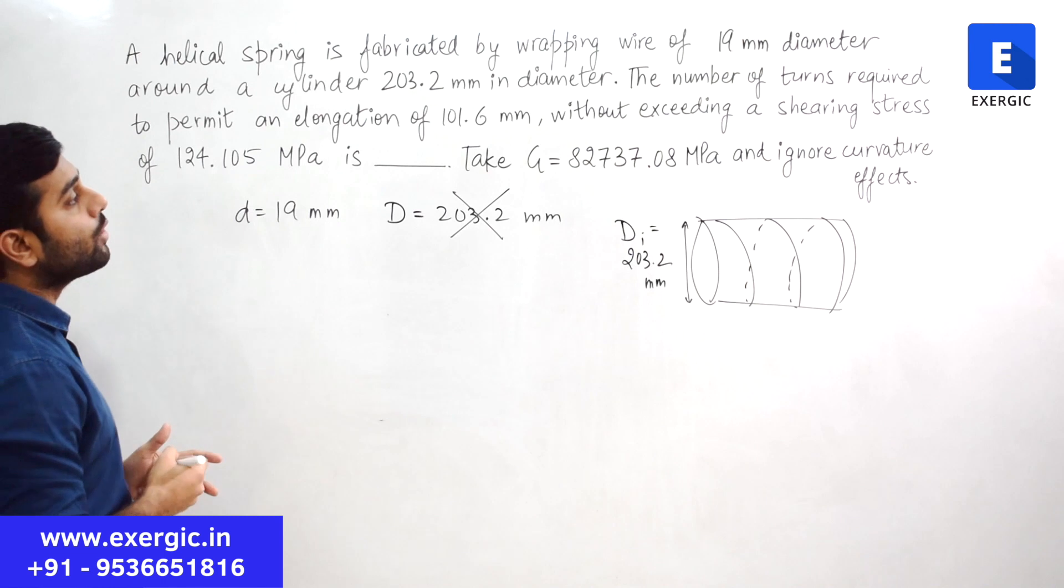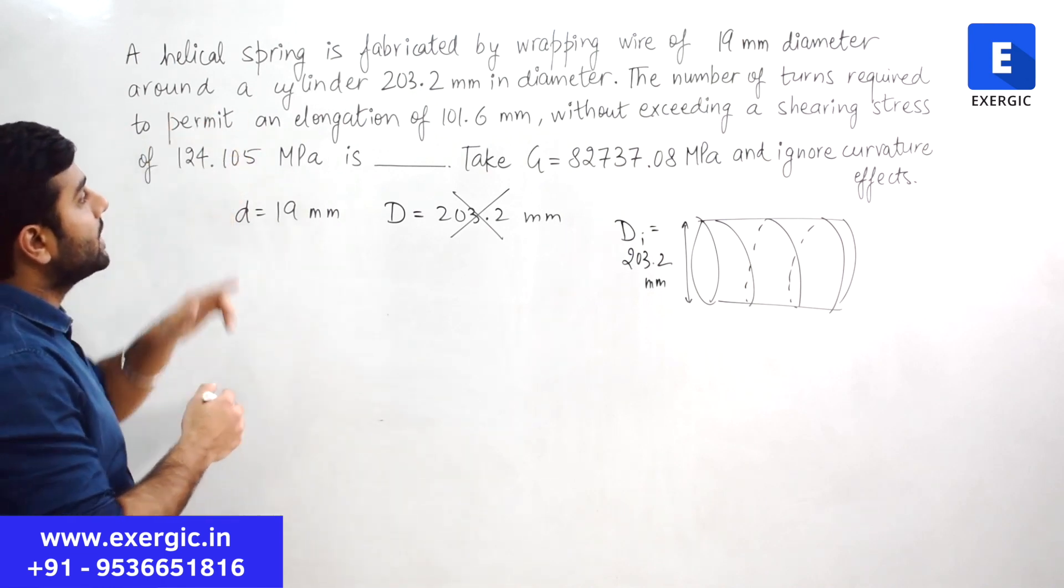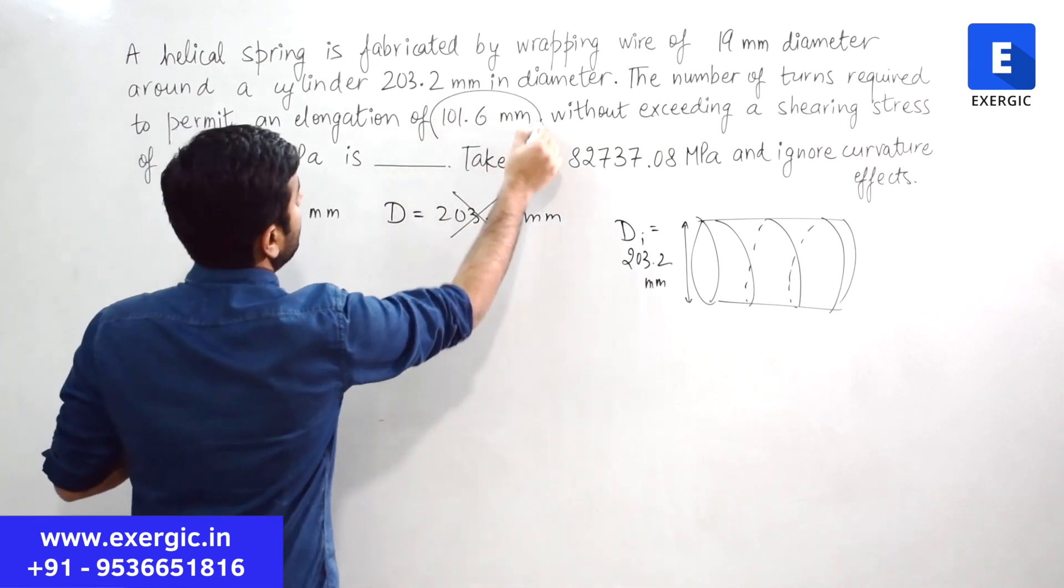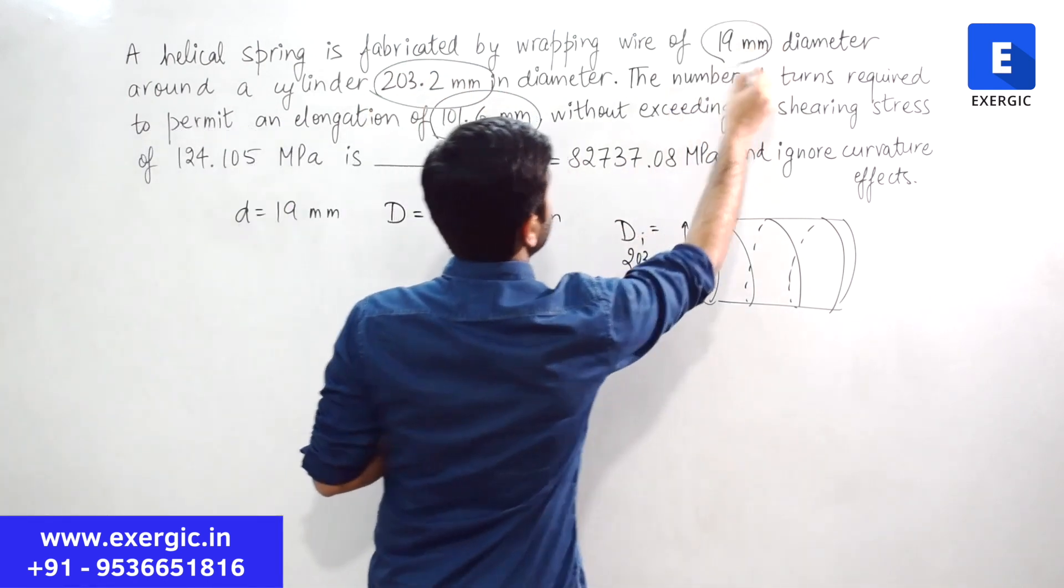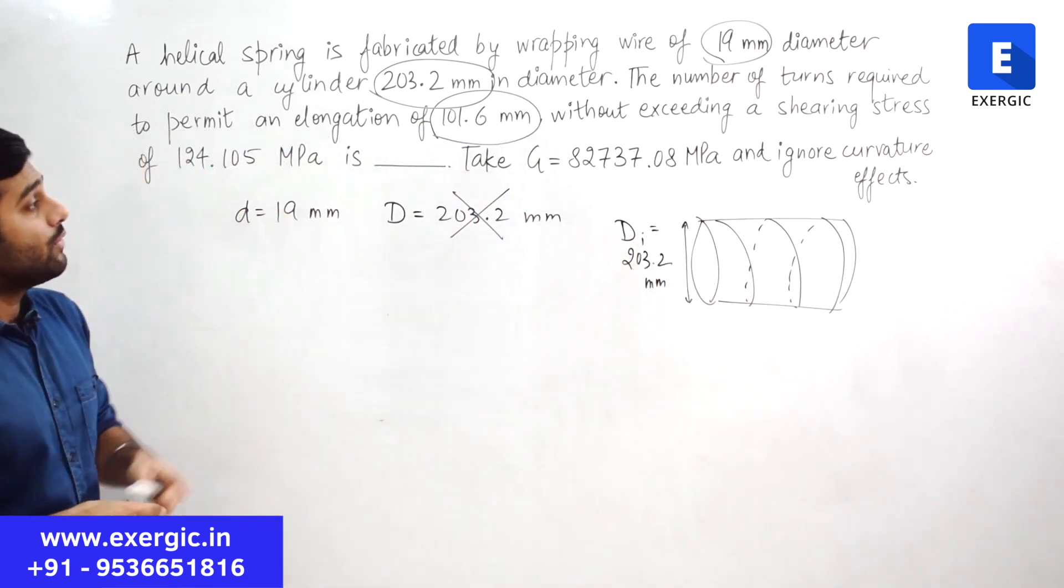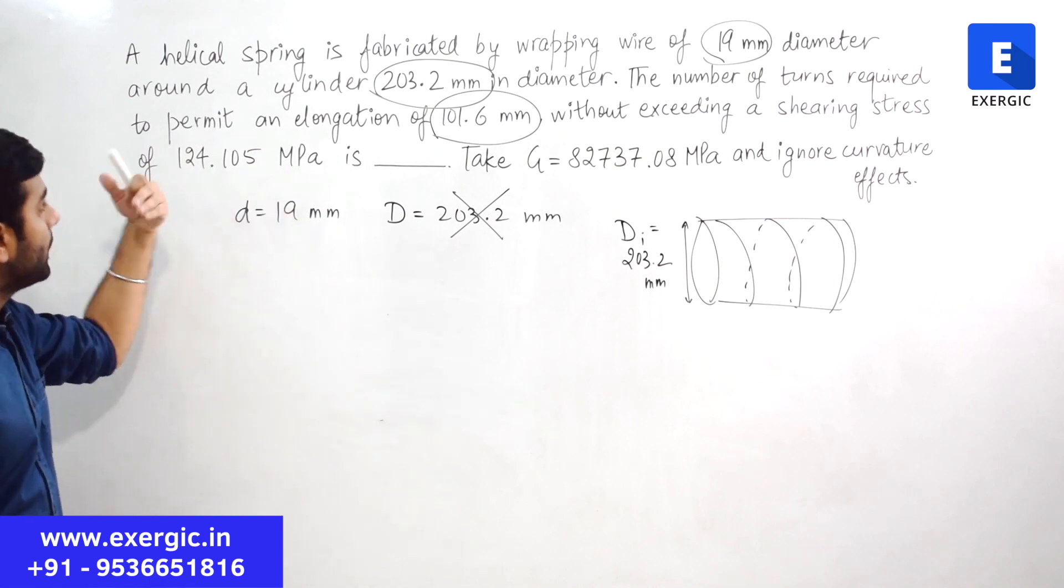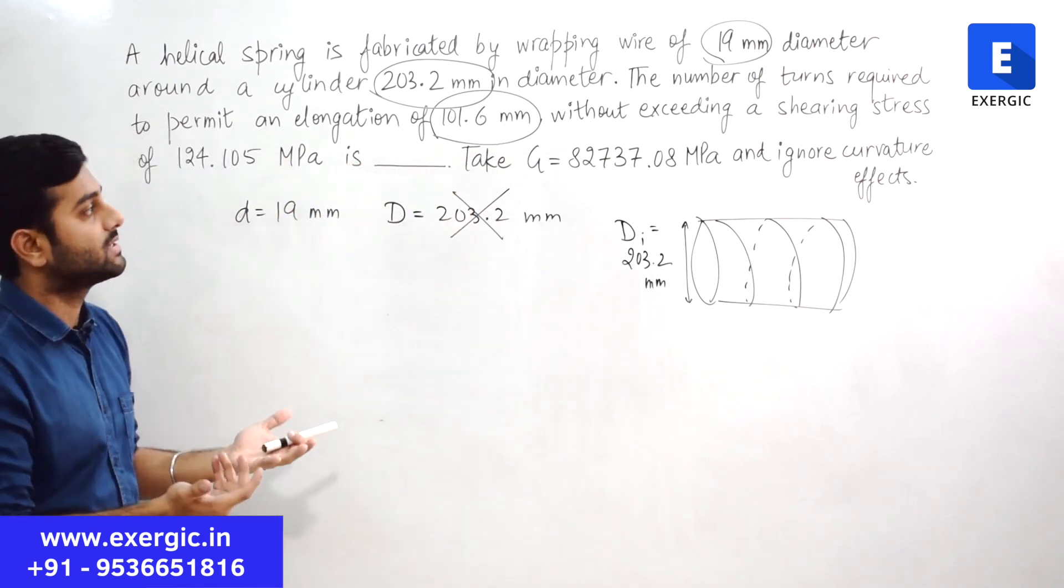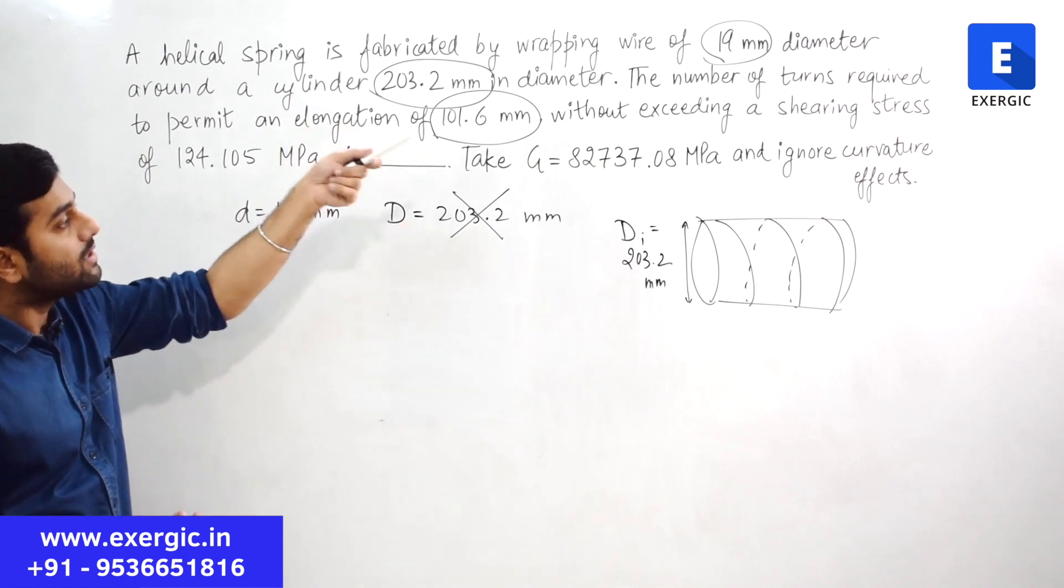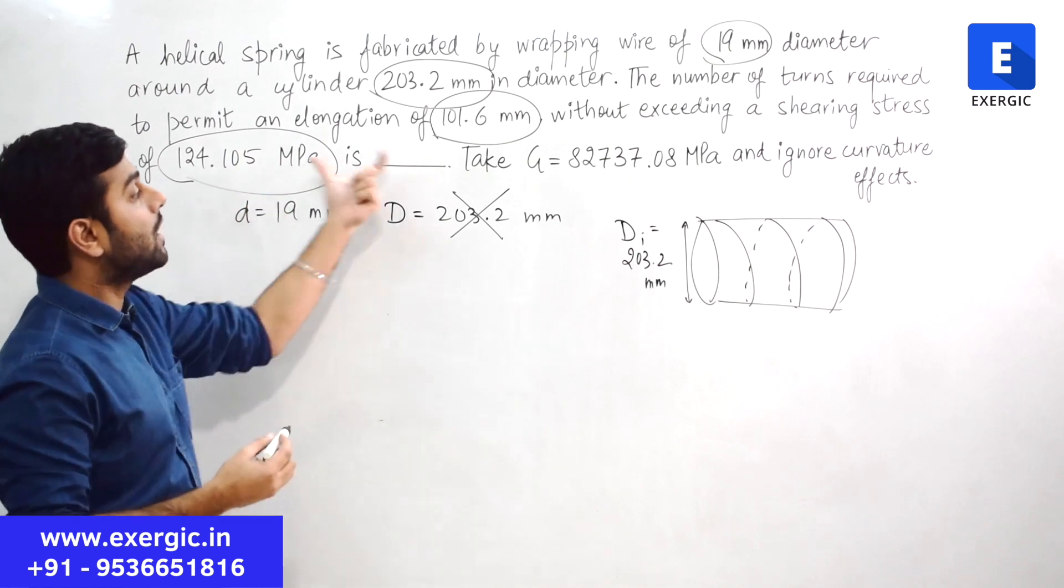Further, the question says that the number of turns required to permit an elongation of this much mm. Let me circle the important numbers here. The number of turns of the spring obviously which are required to allow or to permit an elongation of this much mm of the spring.